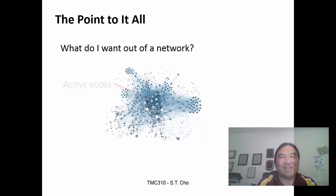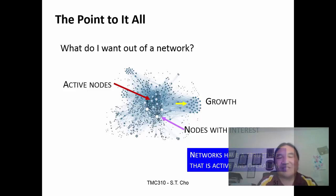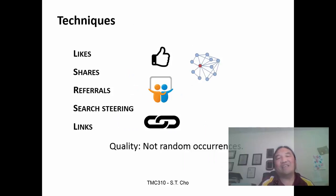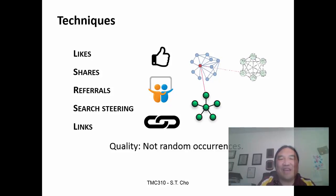At the end of the day, what do I want out of a network? I want active nodes — people who are going to do things. I need growth out of my network. There are nodes of interest: what are the major communications? I need an active operation. Techniques to get activity include things like likes, shares, and referrals.